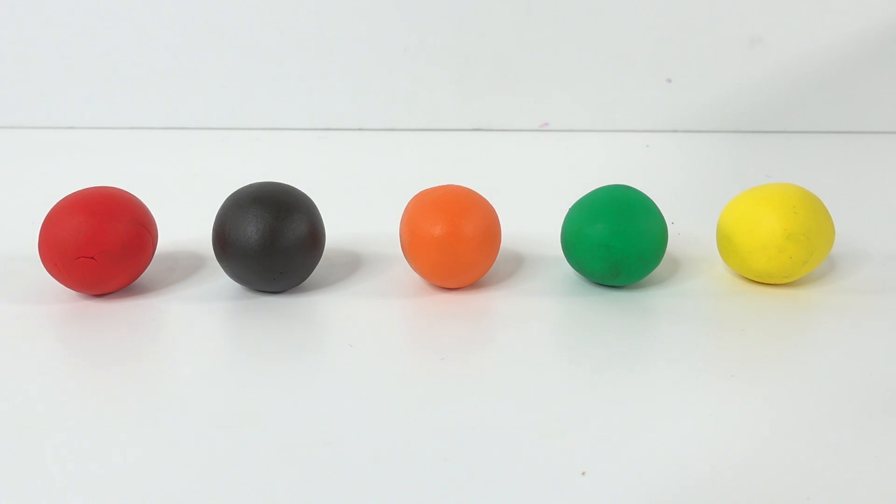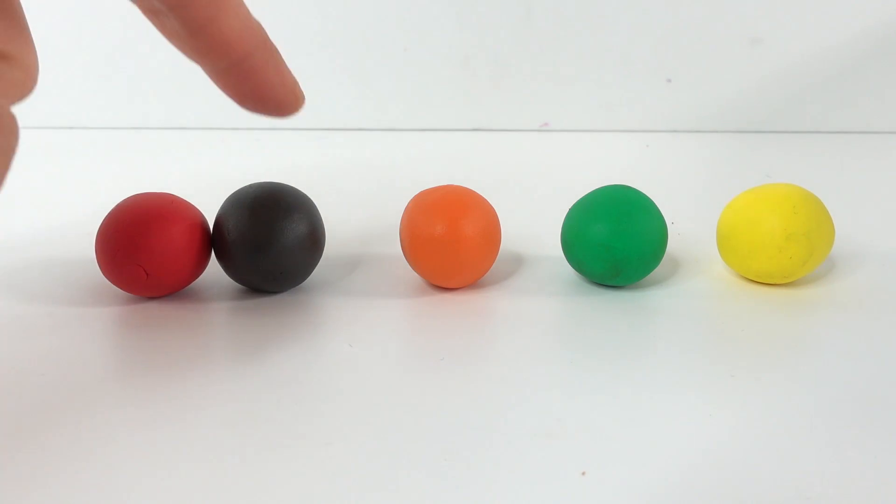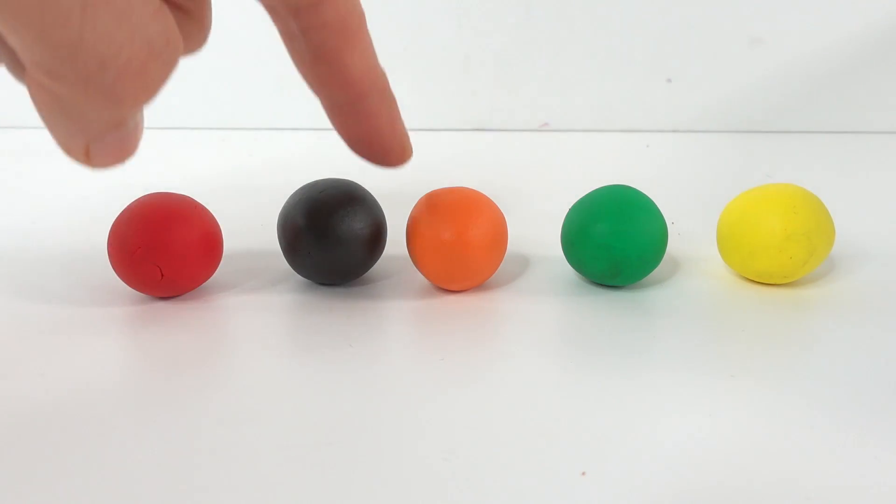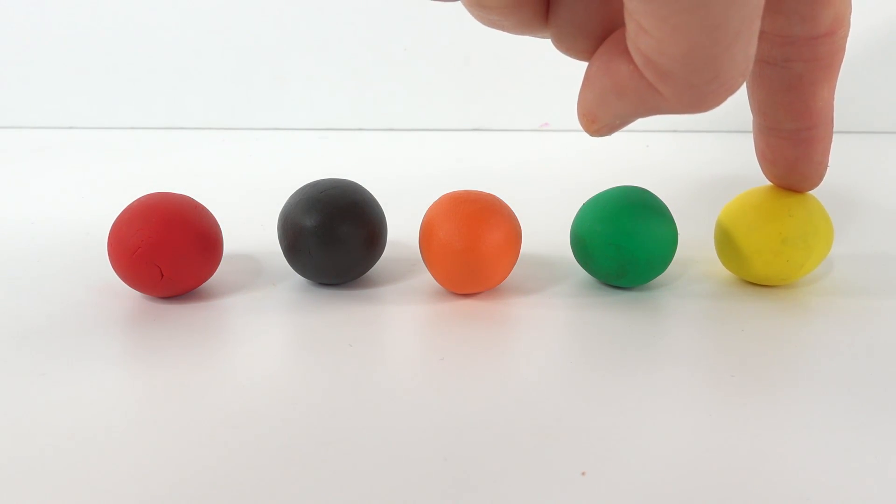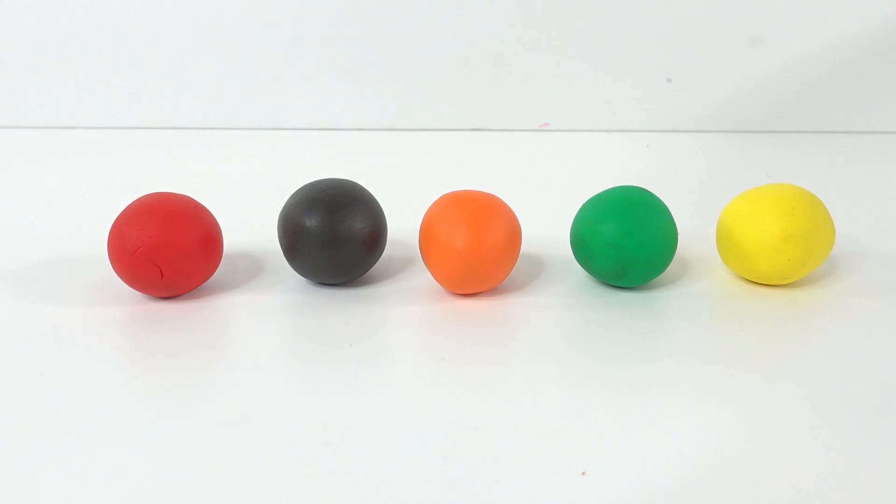So I think this is going to be a lot of fun. I am going to be making five characters. We have Ladybug in red, we have Cat Noir in black, we have Rina Rouge in orange, Carapace in green and of course Queen Bee in yellow. Are you guys ready? Let's get started.